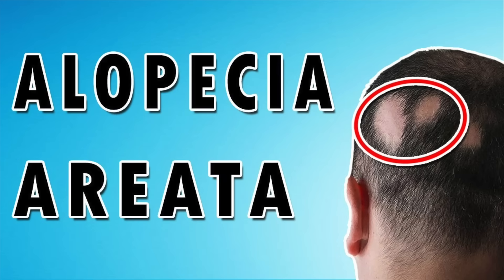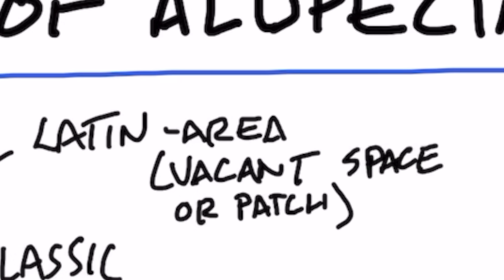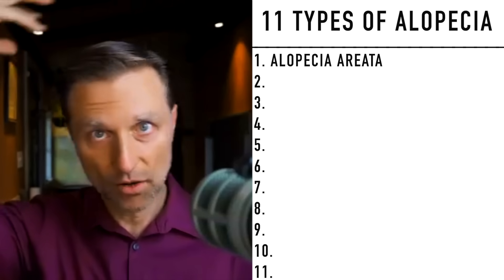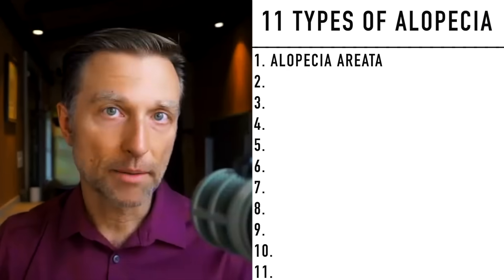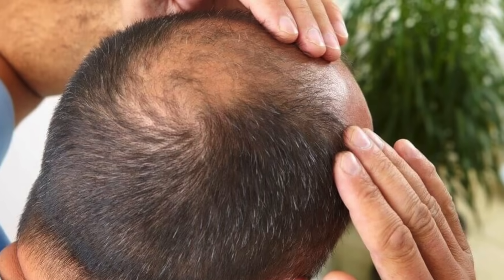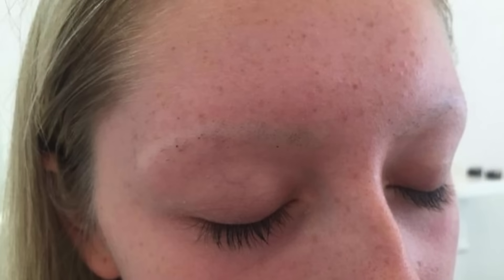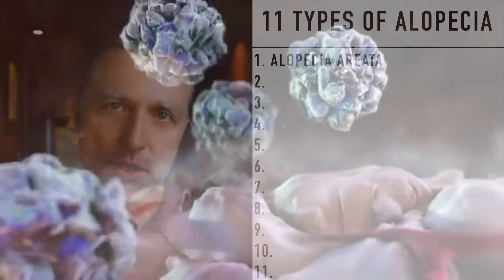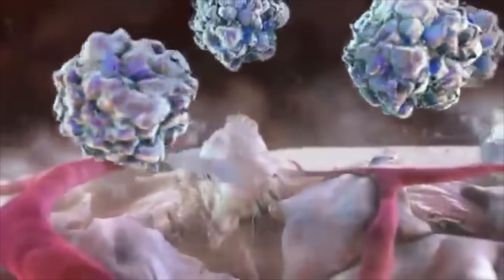Number one is alopecia areata. The word areata comes from Latin meaning area, as in a vacant space or patch. This is where you see patches of hair loss throughout your hair due to an autoimmune disease. With this condition, there's usually a problem with your T cells — part of the immune system. The body has some type of confusion and it's attacking our own hair.